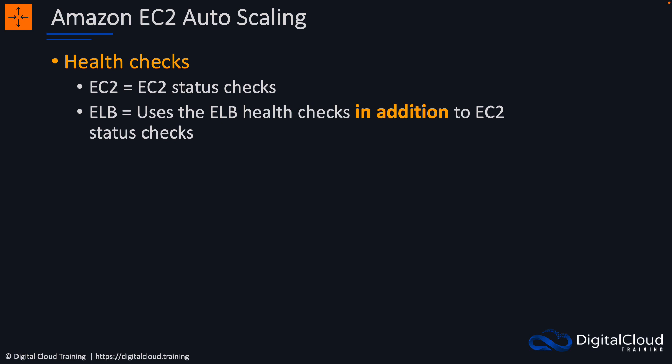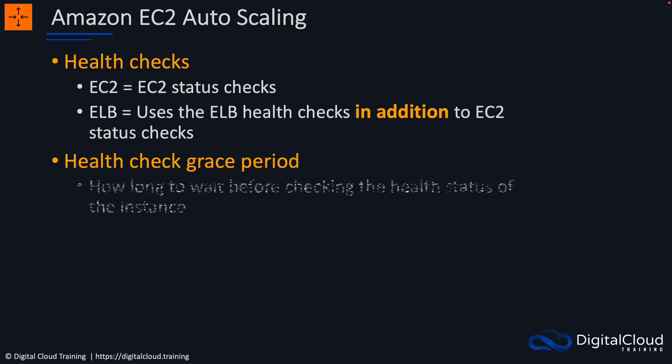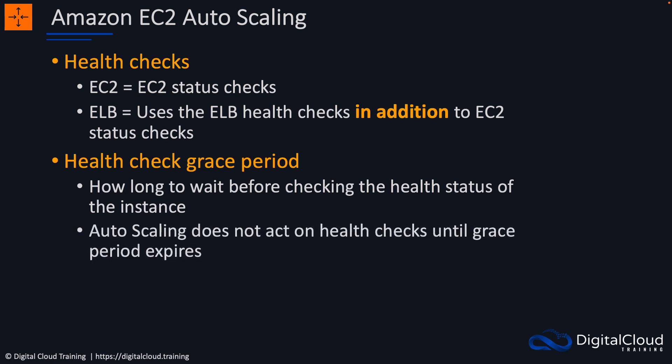If an ELB finds that a target in a target group is unhealthy, it will report that to auto scaling, so auto scaling knows to take it out of action, terminate the instance, and elastic load balancing will remove it from service as well. We then have the health check grace period — this is how long to wait before checking the health status of the instance after it is launched, defined based on how long we think it will be before the application is ready. Auto scaling doesn't act on health checks until the grace period expires, so it won't terminate an instance just because the application port isn't available yet.